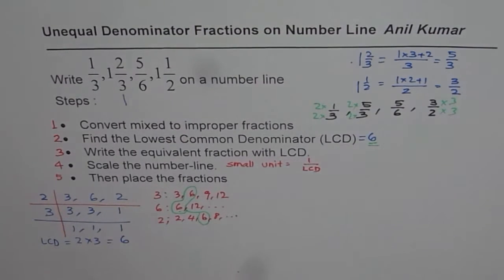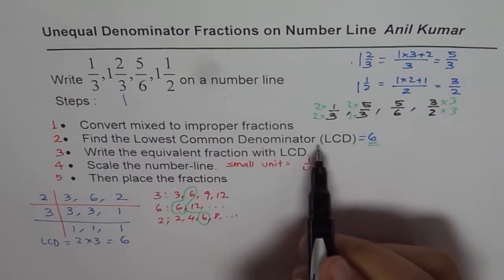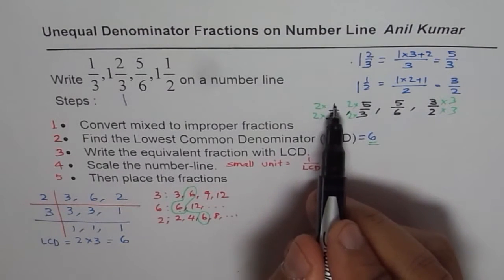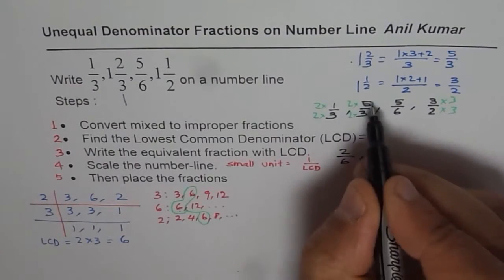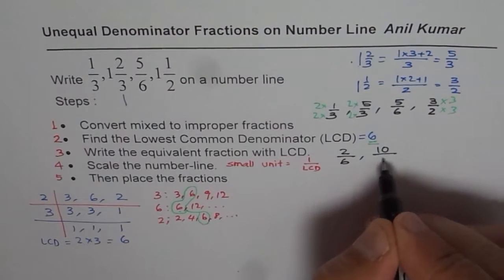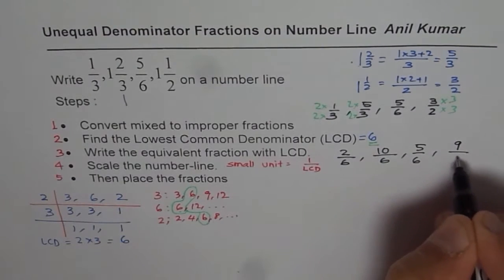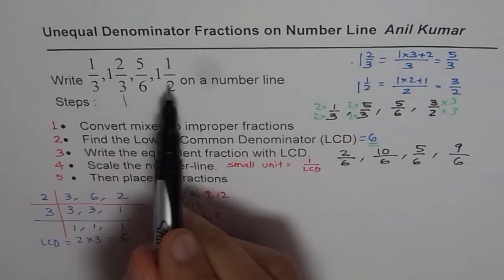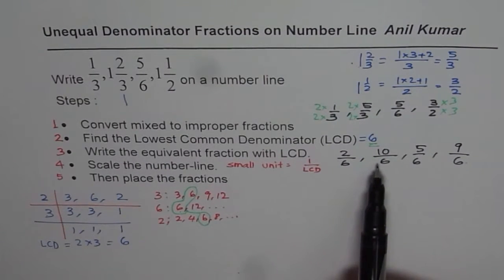Once you do that, you can convert. So let's multiply by 2. Write down these fractions with common denominator of 6. So the first one will be 2 times 1 is 2, 2 times 3 is 6. So we get the first one as 2 over 6. The second one will be 10 over 6. The third one is 5 over 6. And the fourth one is 9 over 6. So we have these 4 fractions which are equivalent to the given fractions. So we have done step number 3.